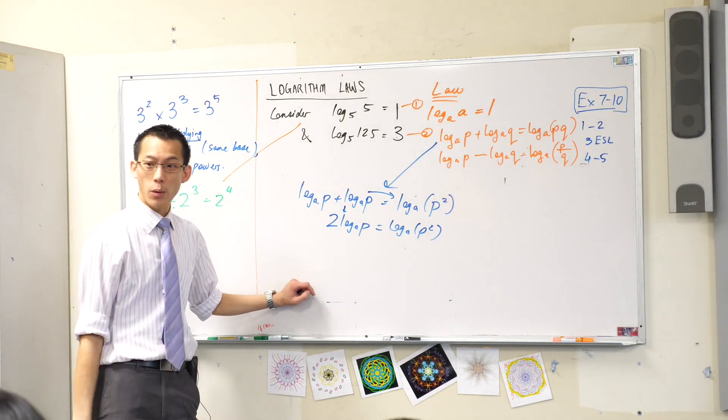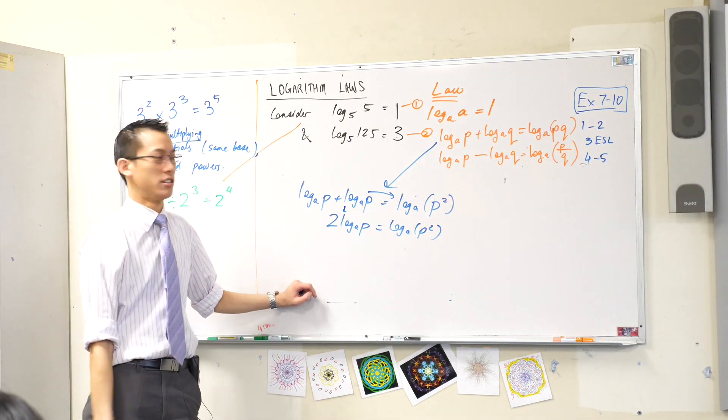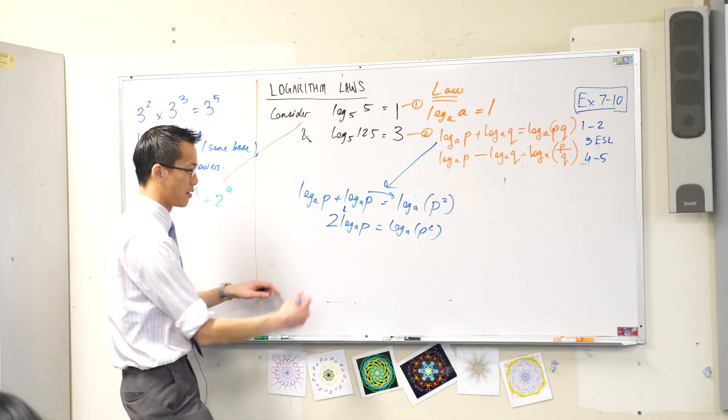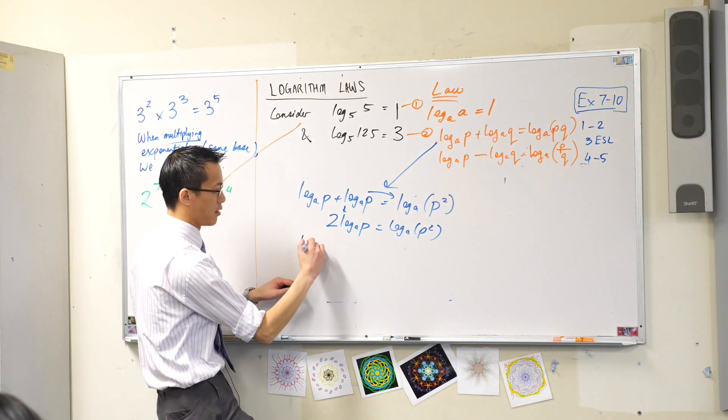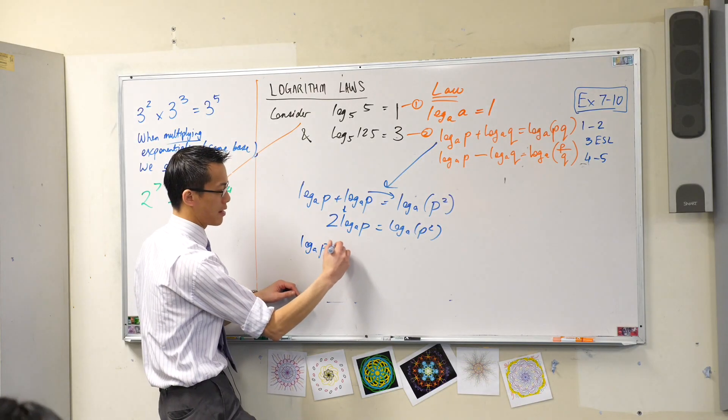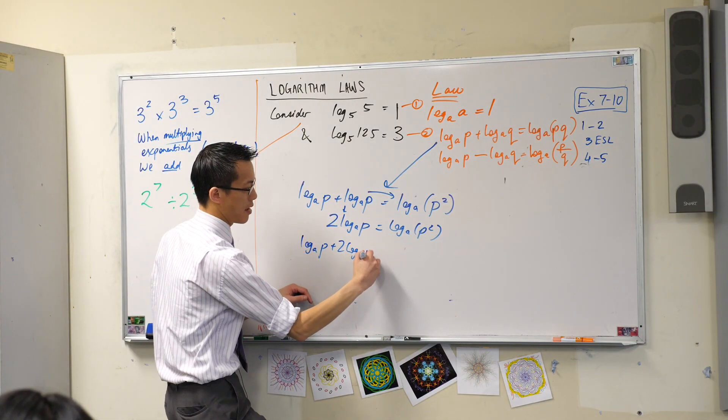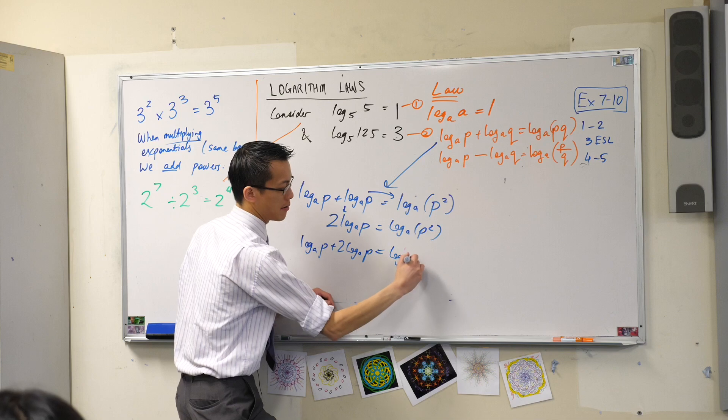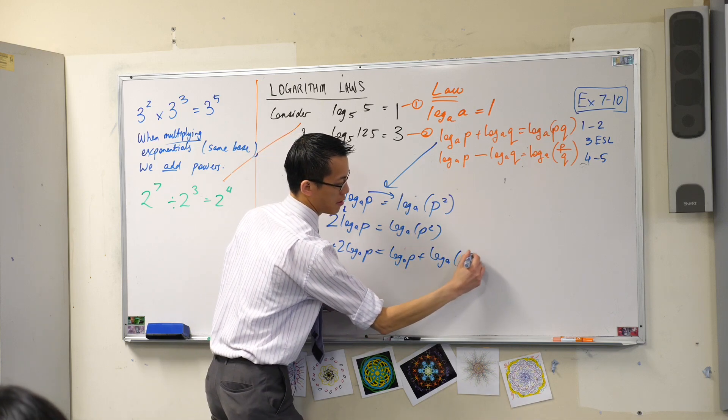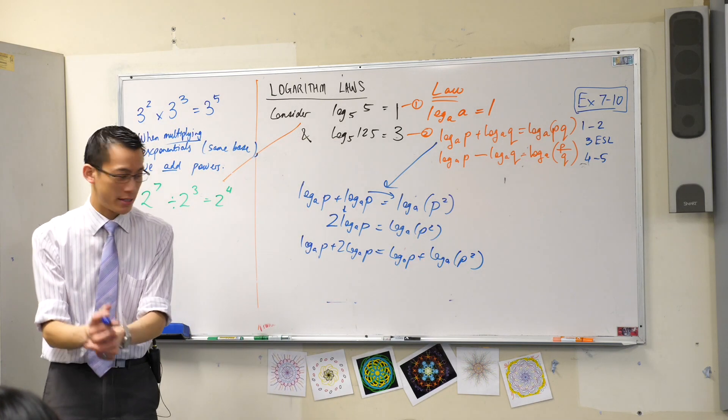Now think about what would happen if I added another log base A of P to both sides. If I added another log base A of P here and I added another one here. Think about this again.